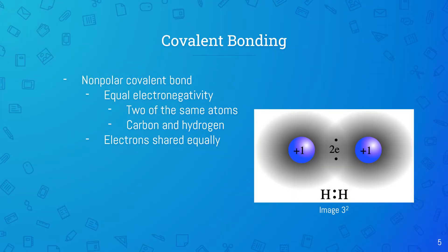Nonpolar covalent bonds are between two atoms that have equal electronegativity, which is typically two of the same atoms or between a carbon and a hydrogen. Electrons are shared equally, so no partial charges occur. Here's an example of a nonpolar bond.